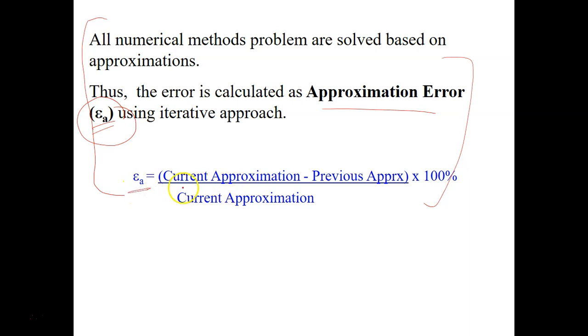So EA, the approximation error, equals to the current approximation minus your previous approximation divided by current approximation. What does it mean by approximation? This means current answer minus previous answer divided by current answer times 100%. And this EA is actually an absolute value, so if you got negative, you can just turn it into positive value.